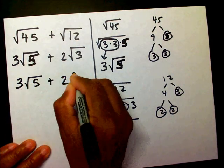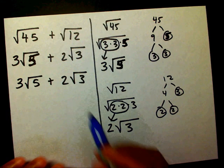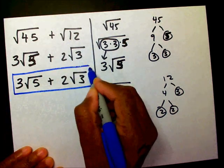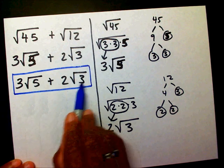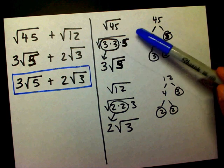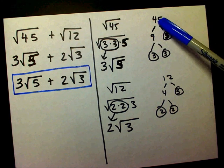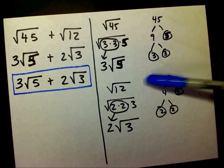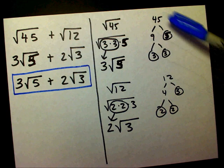Now that I've simplified my radicals, I find that my radicands are not the same — I have a radicand of 5 and a radicand of 3. Since my radicands are not the same, this is my final answer. This was an excellent demonstration of why you want to show your work, because I was able to look at my work and catch that 9 times 5 is 45, not 9 times 3. If I hadn't shown my work, I might have added both and not realized I had different radicands.